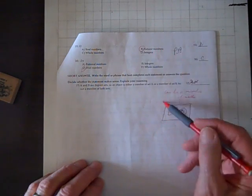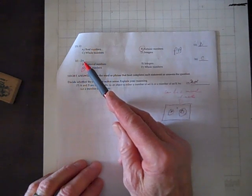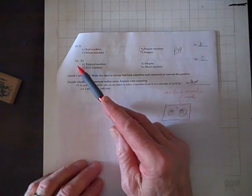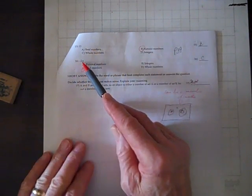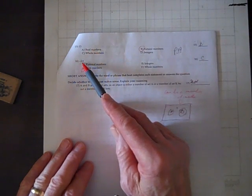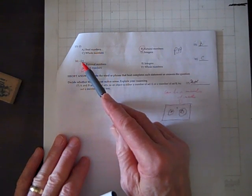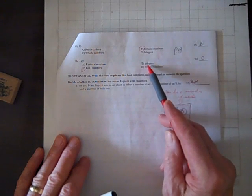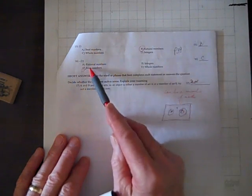Page 39, you'll see that diagram. Minus 2 pi: that is a real number. It's not a rational number, it's not an integer. It's a decimal that never repeats—it's not a repeating decimal. It's not an integer, nor is it a whole number, but it is a real number.